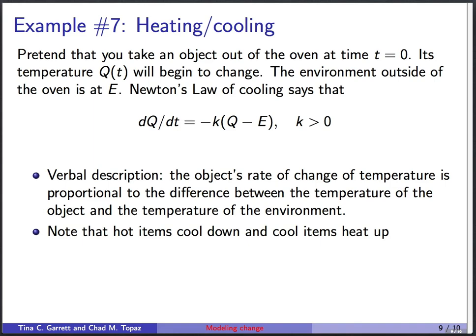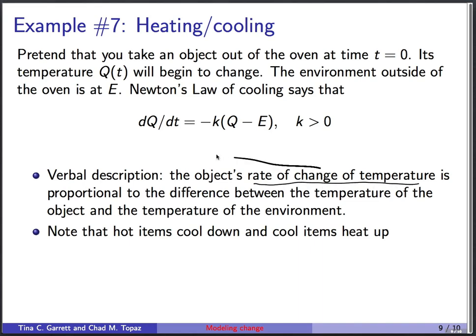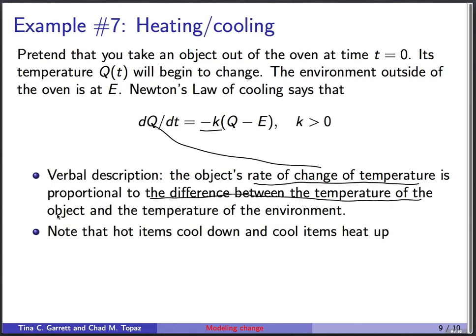The last example goes the opposite direction — from an equation into words. Pretend you take an object out of the oven at t equals zero. Its temperature q of t starts to change. The environment outside is at e degrees. Newton's law of cooling is this differential equation: dq/dt equals minus k times (q minus e), where k is a positive constant. The verbal description: the object's rate of change of temperature is proportional to the difference between the temperature of the object and the temperature of the environment.